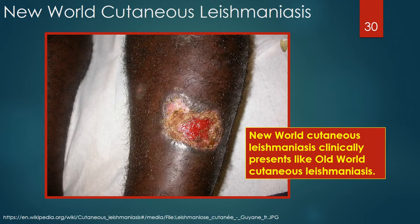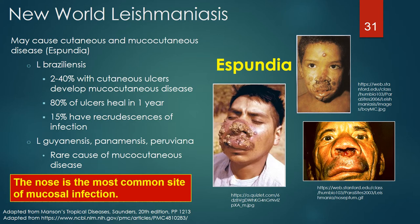New World cutaneous leishmaniasis clinically presents like Old World cutaneous leishmaniasis, as demonstrated in a picture of a skin lesion from a gentleman in French Guyana, South America. New World leishmaniasis often causes more than just cutaneous lesions; it can also involve the mucous membranes causing mucocutaneous leishmaniasis, often called espundia in Central and South America, affecting the mucous membranes of the nose, pharynx, and mouth. Leishmania braziliensis is the most common cause. 80% of cutaneous ulcers caused by Leishmania braziliensis heal within one year, yet 15% will have recrudescences or secondary infections if not treated.